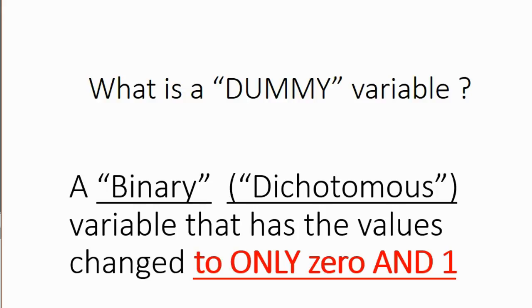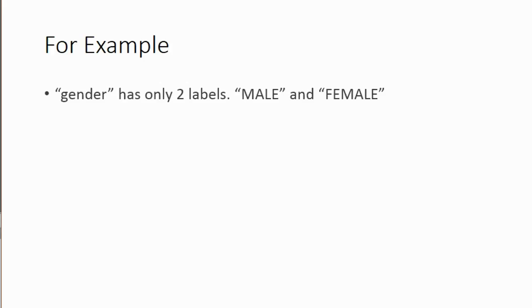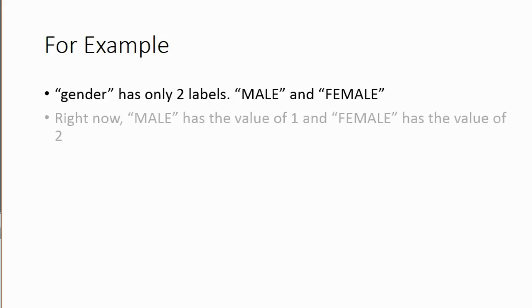What am I talking about? Well, here's an example. In our data set, gender has only two labels — male and female. So gender is binary as far as variables go. It's dichotomous. It only has two possible values.